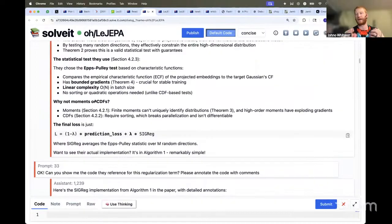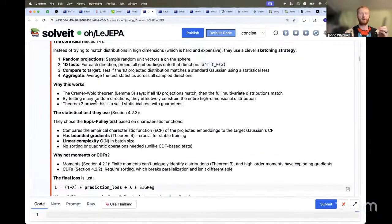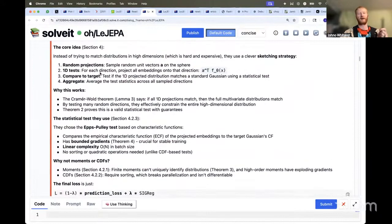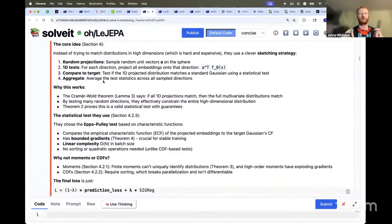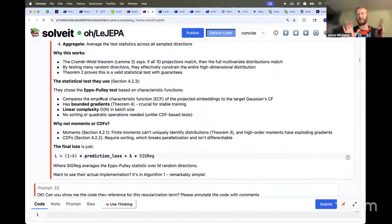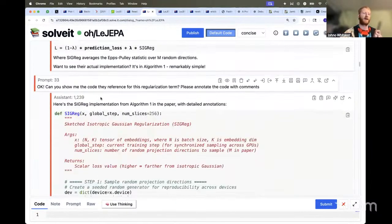Starting to dig into okay, what is the actual - what is this magical thing that they do? What does it look like, how does it work? The idea is that we're going to take random projections. So rather than looking at the whole high-dimensional embedding space, we're going to take random projections, and then along that line we're going to use some very clever statistical tests to check for how desirable or how nice the distribution of our set of sample points is. Then I said 'okay great, can you show me the code?'